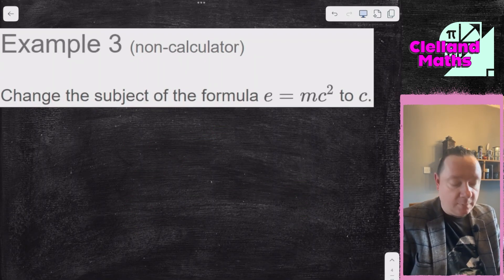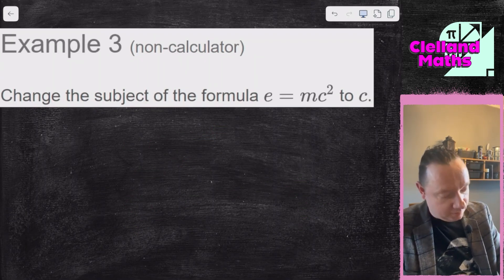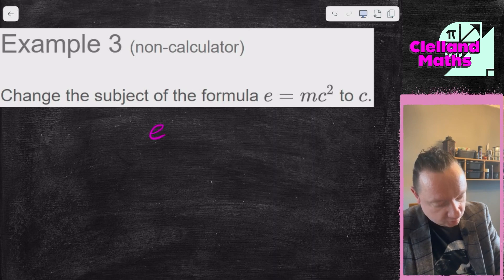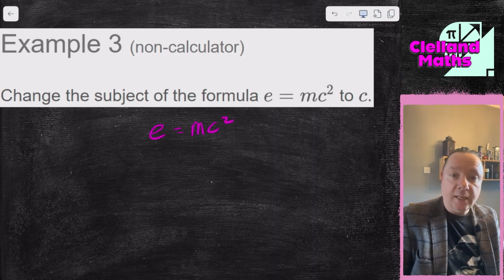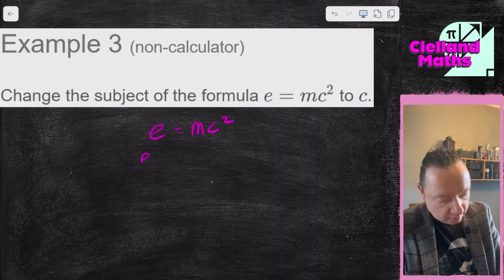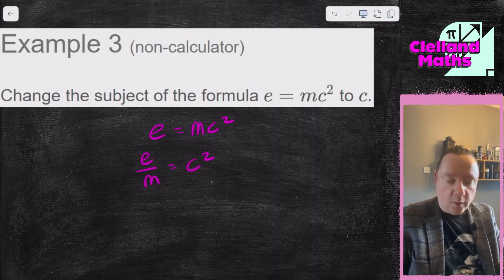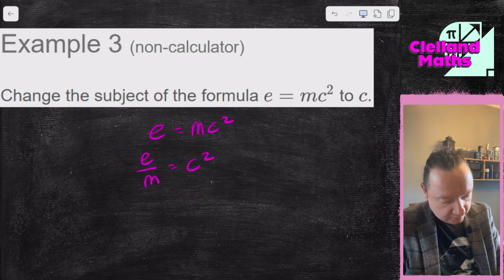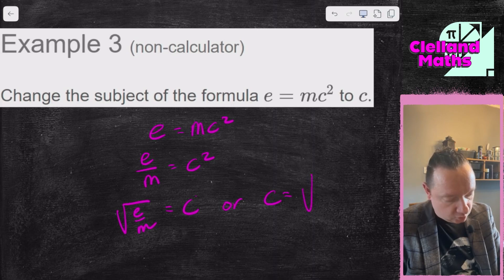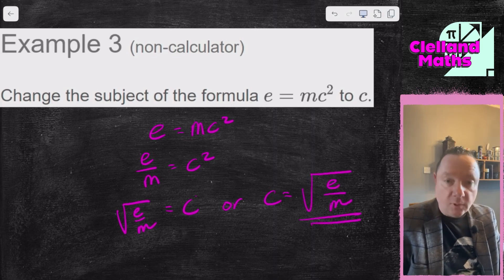Change the subject of the formula E = mc² to c this time, not to m. So E equals mc². I want c this time, so I need to divide by m. So E over m equals c². And then the opposite of squaring is square rooting, so c equals the square root of E over m. And we're done.